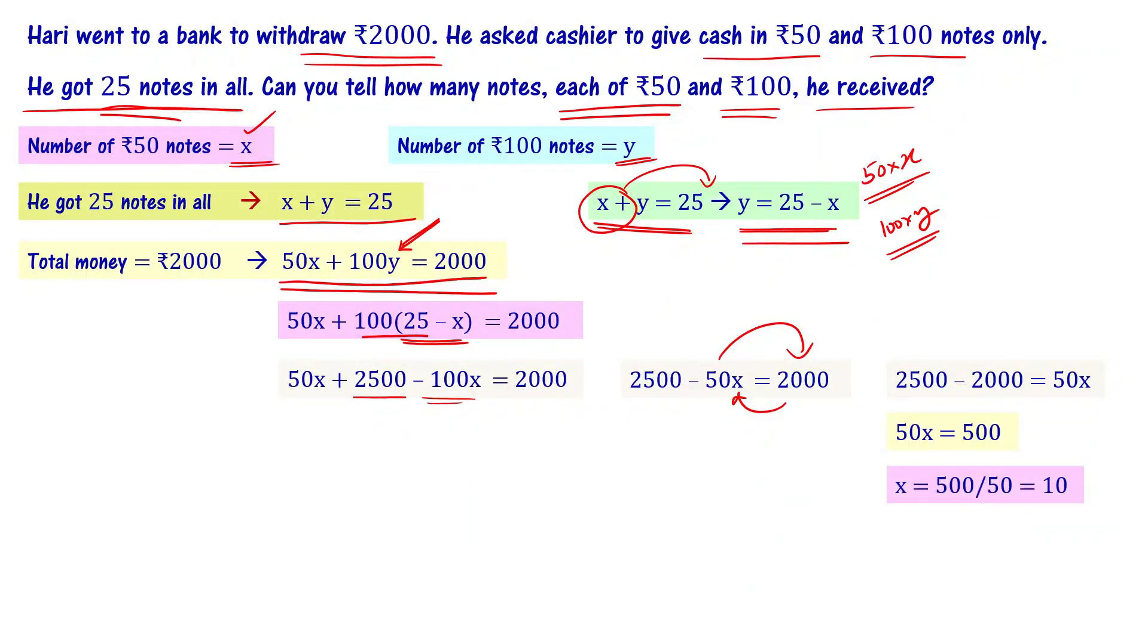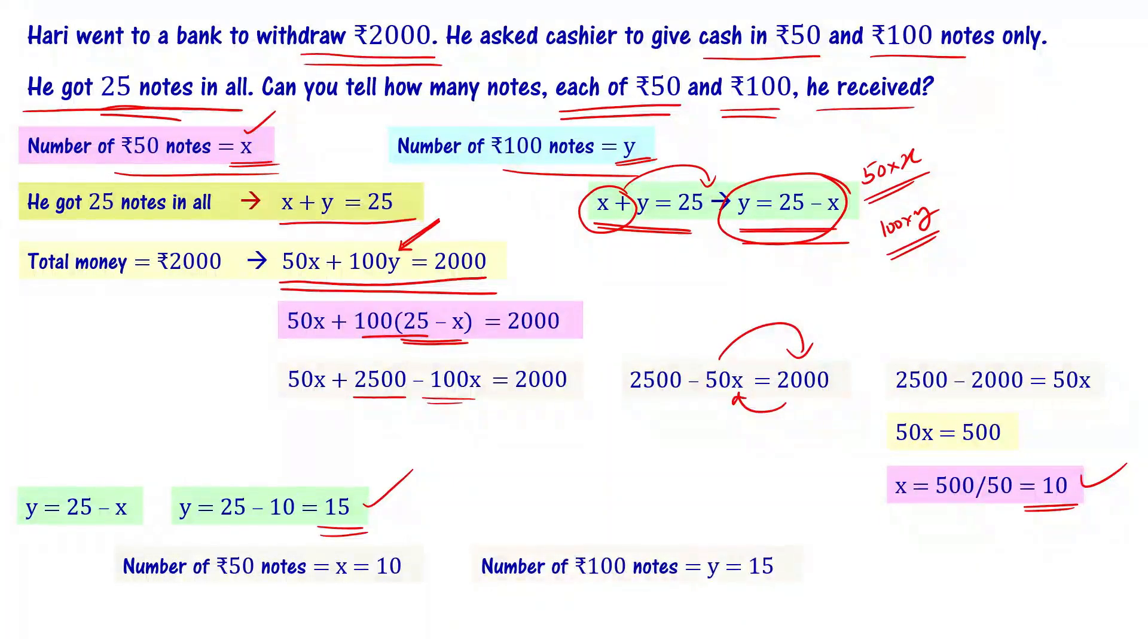So x value is 10. For y value, we already have y equal to 25 minus x. Substituting x value, y equal to 25 minus 10, that is equal to 15. So x is 10, representing ₹50 notes, and y is 15, representing ₹100 notes. Number of ₹50 notes is 10, number of ₹100 notes is 15.